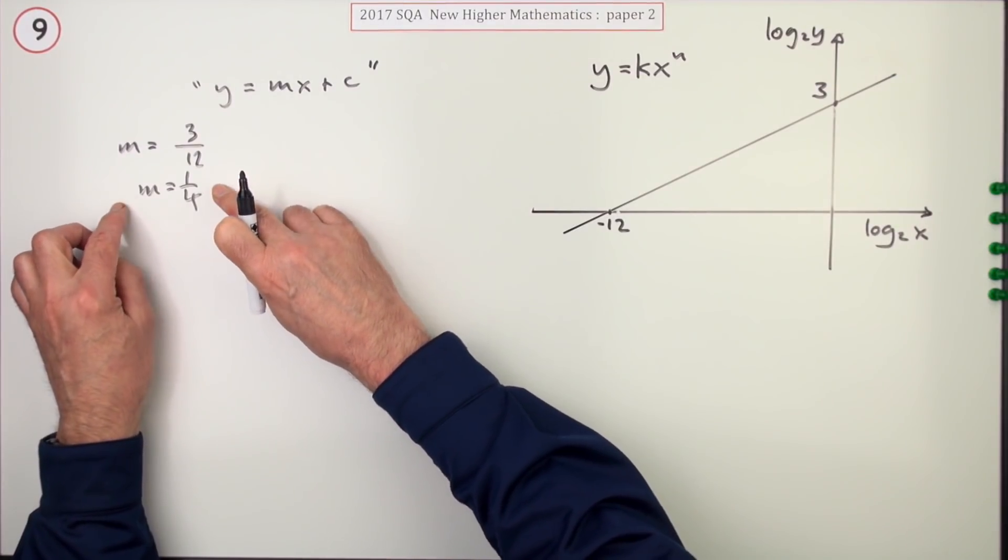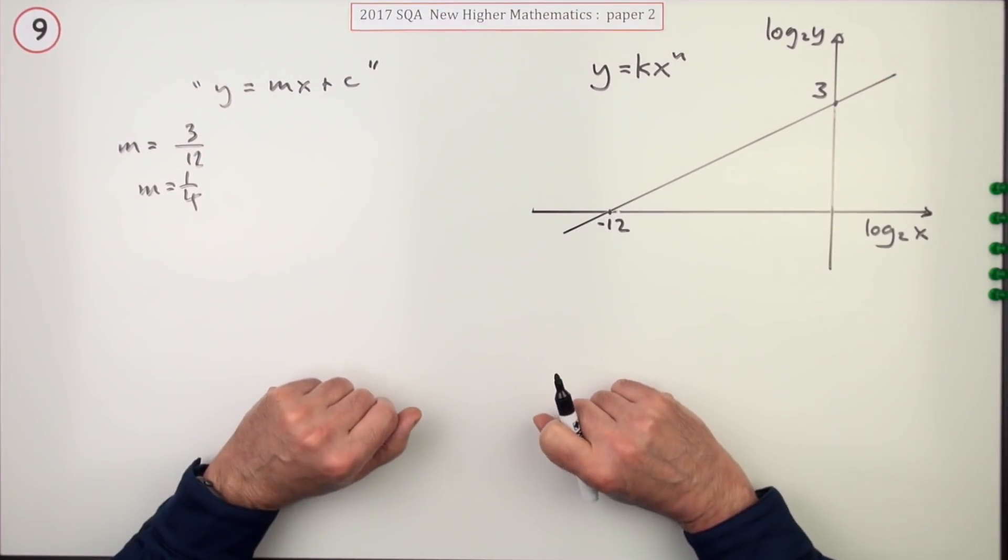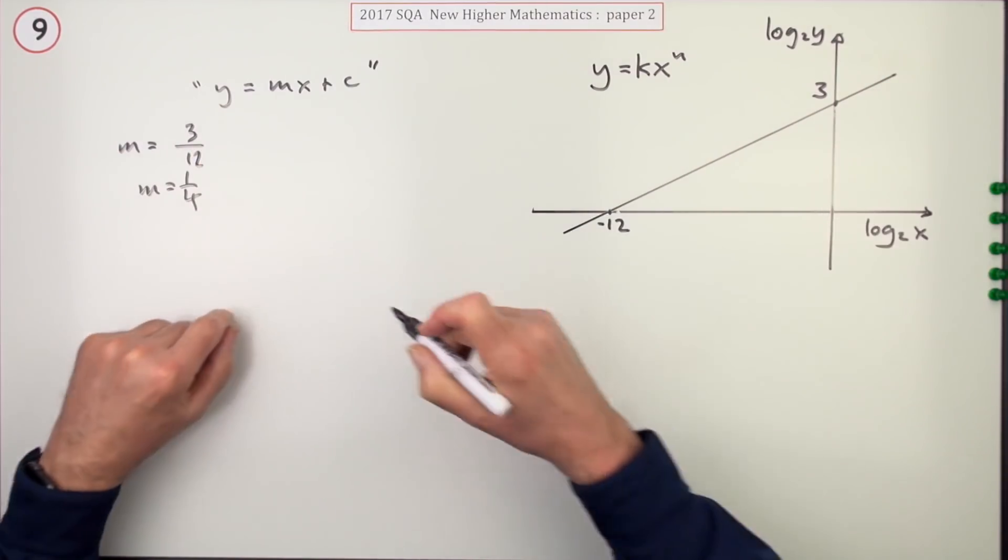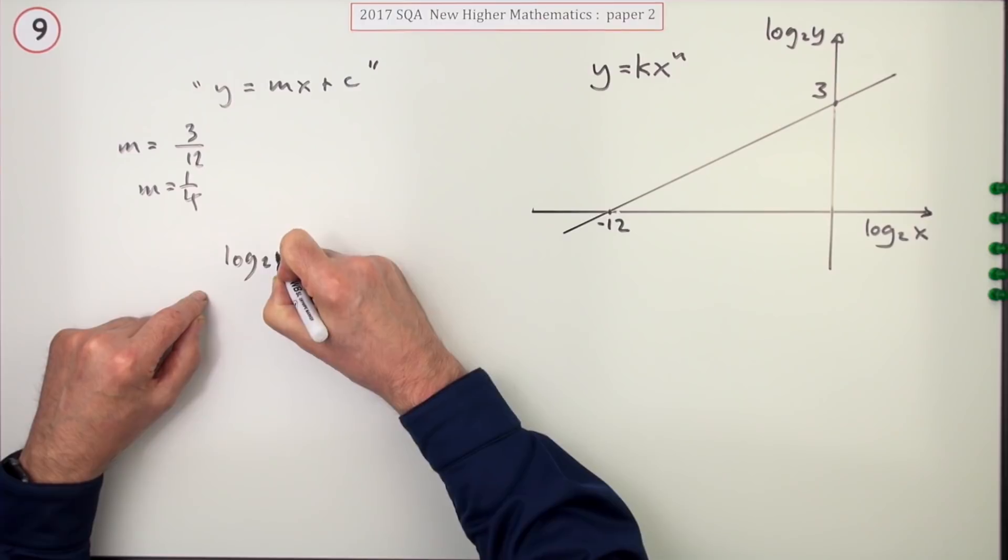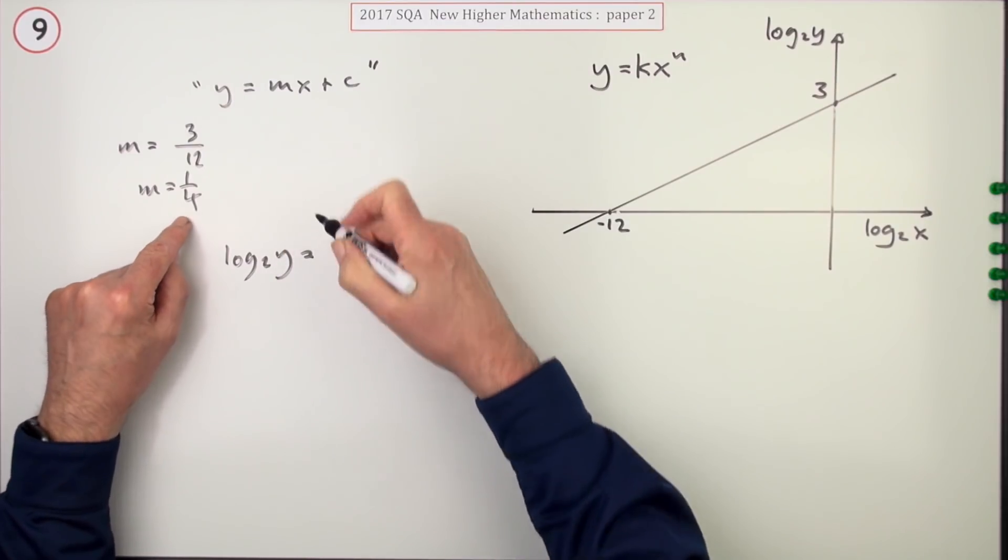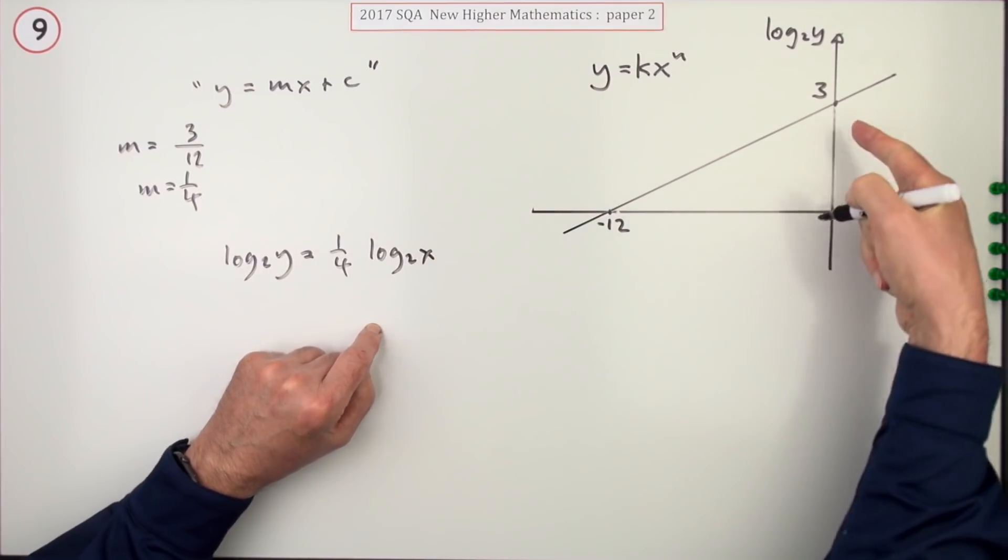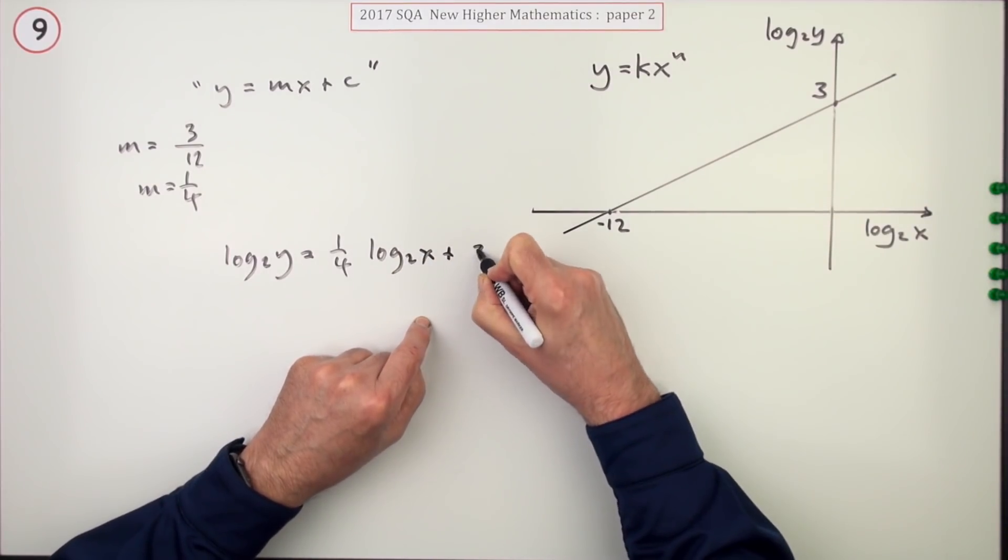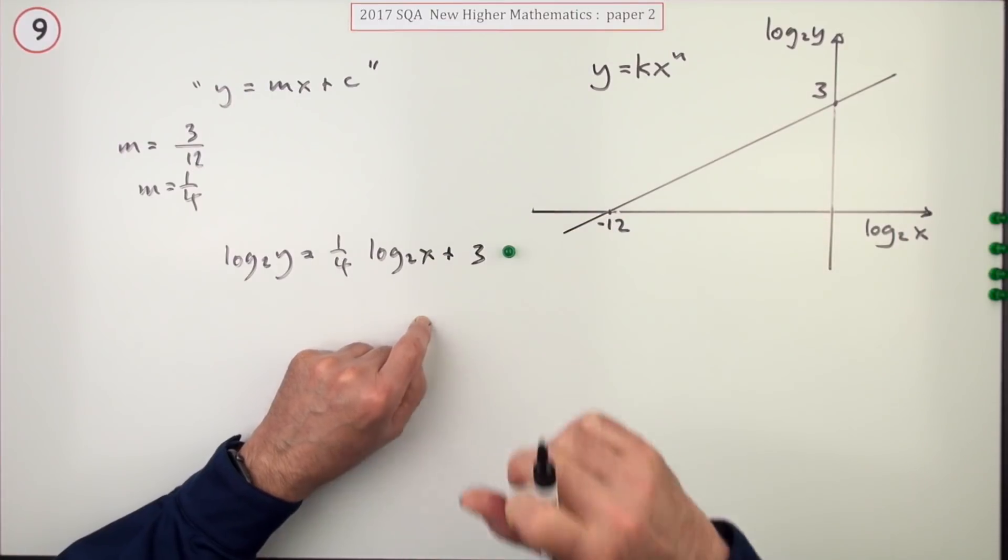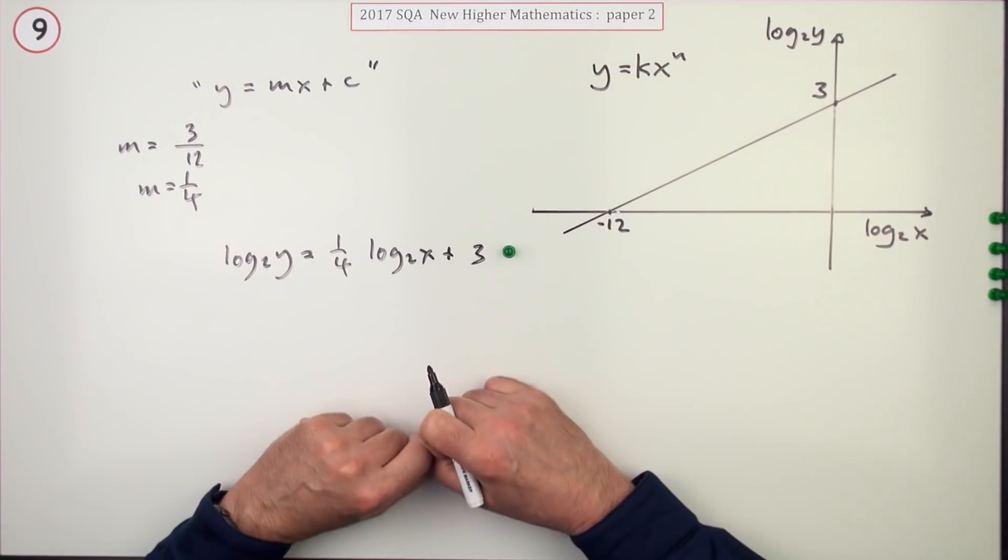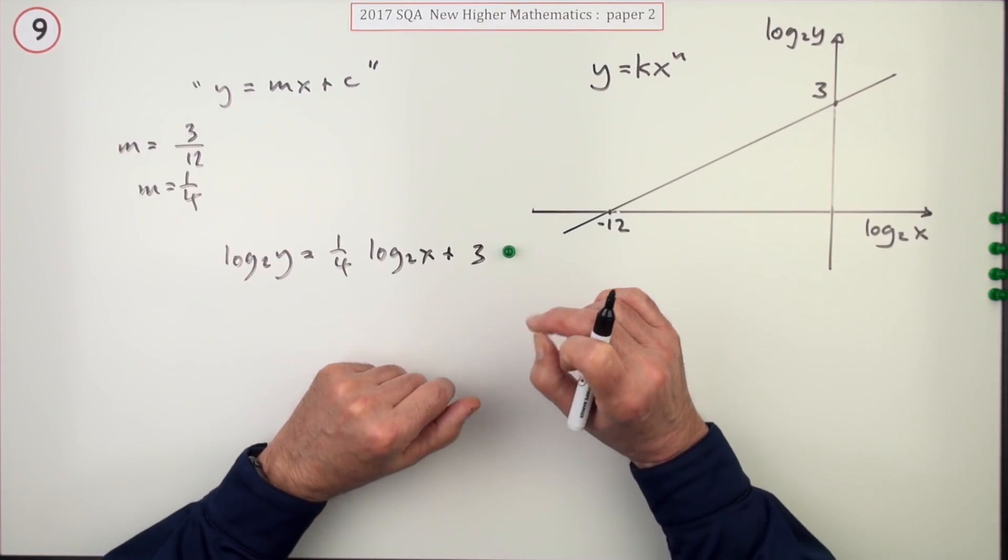They're not giving you the first mark until you put it all together and get that equation. So the equation now says the vertical one is actually log base 2 of Y, the gradient is a quarter, the horizontal variable is log base 2 of X, and the vertical intercept there was 3. Now you get the first mark.